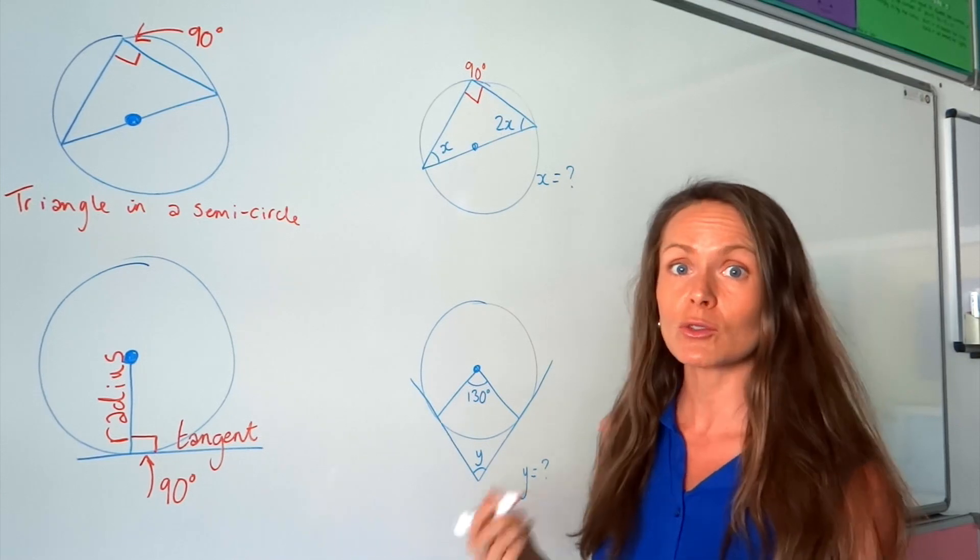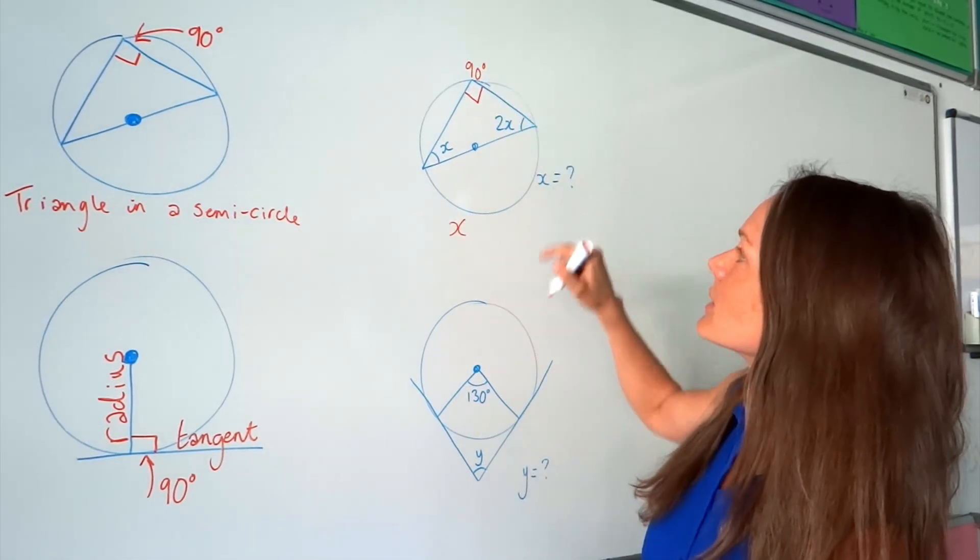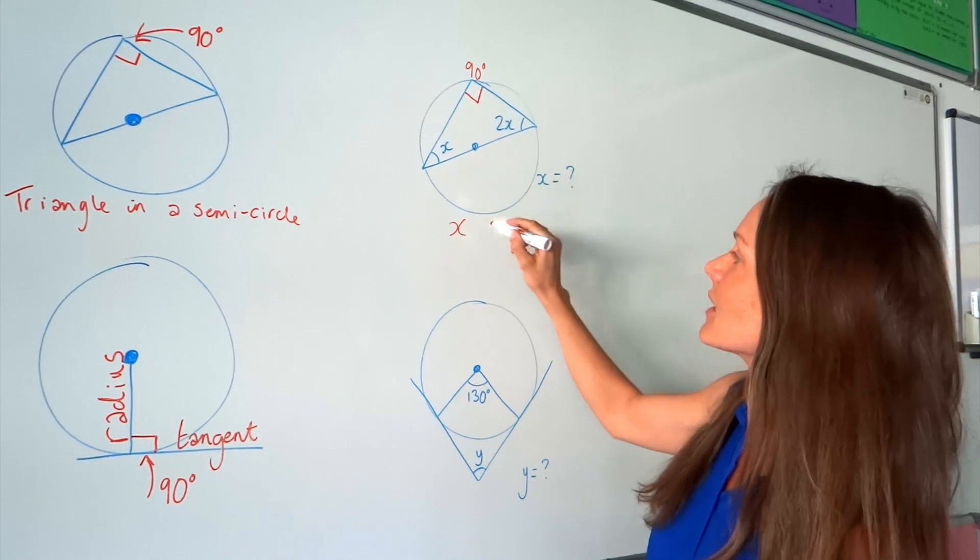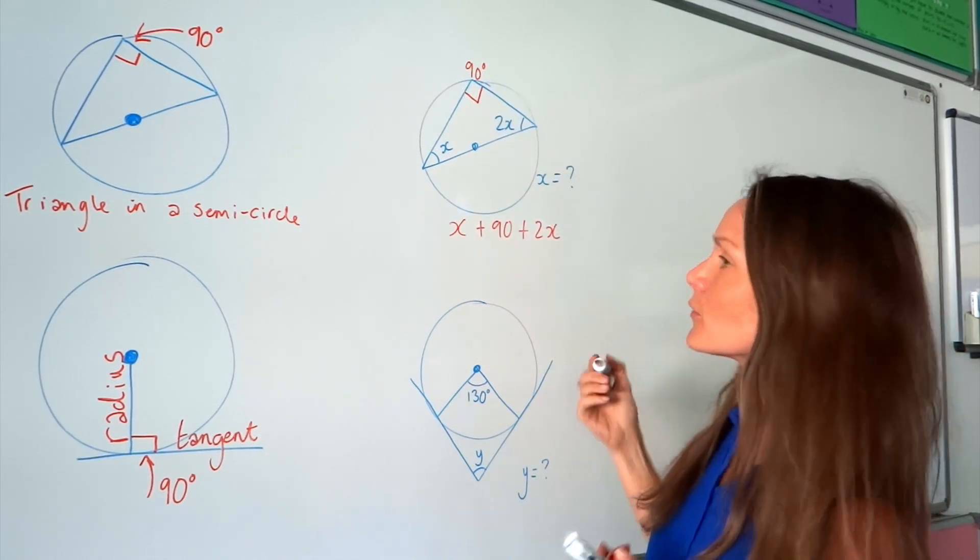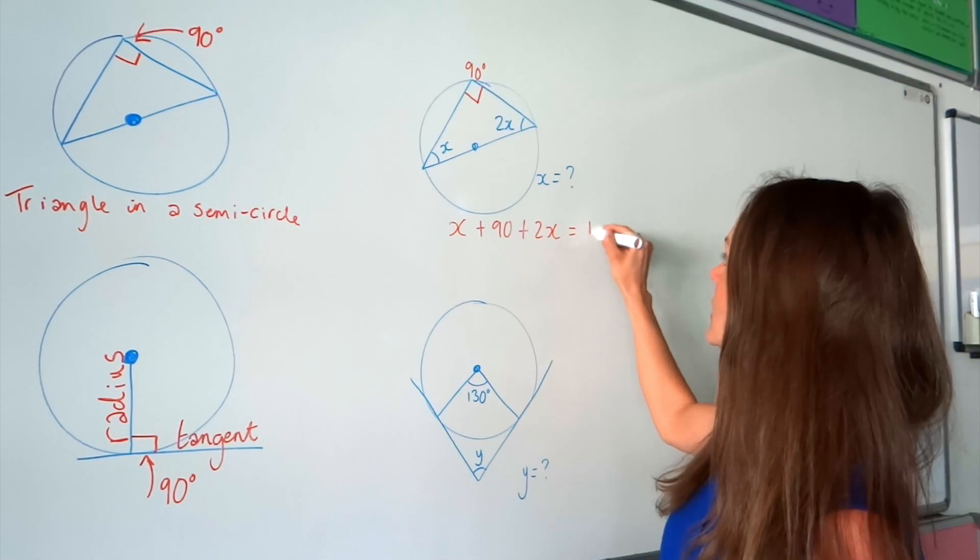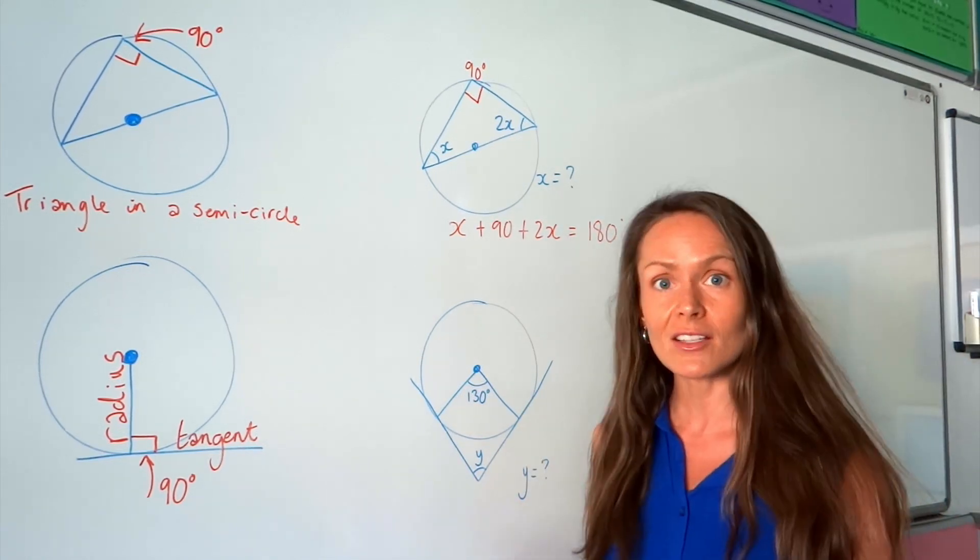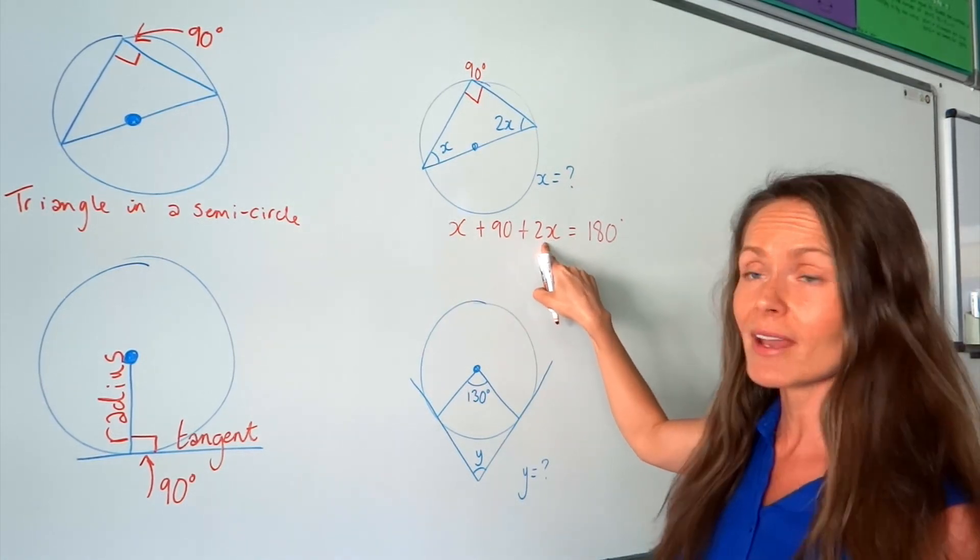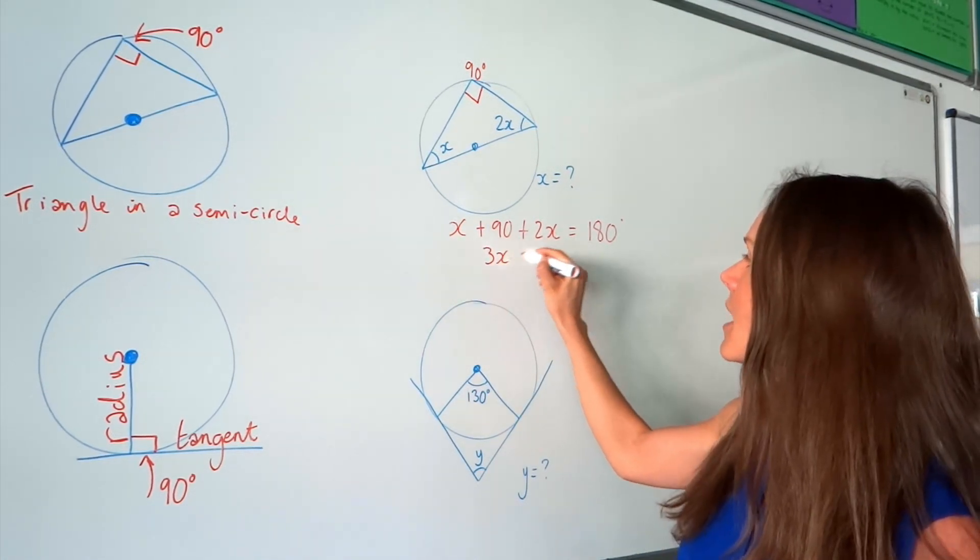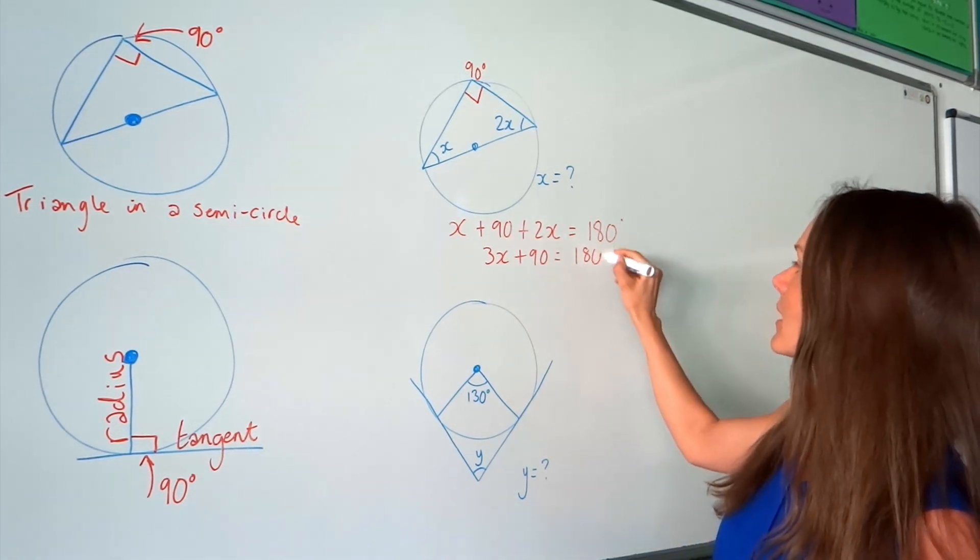So, we can use this fact to write down an equation. If I add together all of these three angles, so X plus 90 plus 2X, I know that if I add those three together, it should give me 180 degrees. Now, I'm going to simplify this and then solve the equation. Here, I've got 1X and I'm adding 2X here. So, that gives me 3X. And then, I've still got plus 90 and 180 is still over on the right hand side.